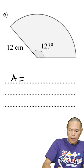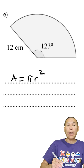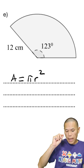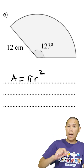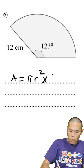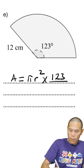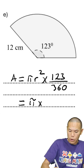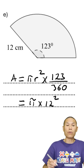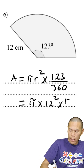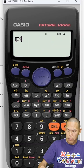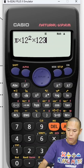The area is pi r squared, and we just need to work out the area of the sector that is 123 degrees out of 360. So that is pi times 12 squared, because the radius is 12, times 123 out of 360. On the calculator, that is shift pi times 12 squared times 123 out of 360.